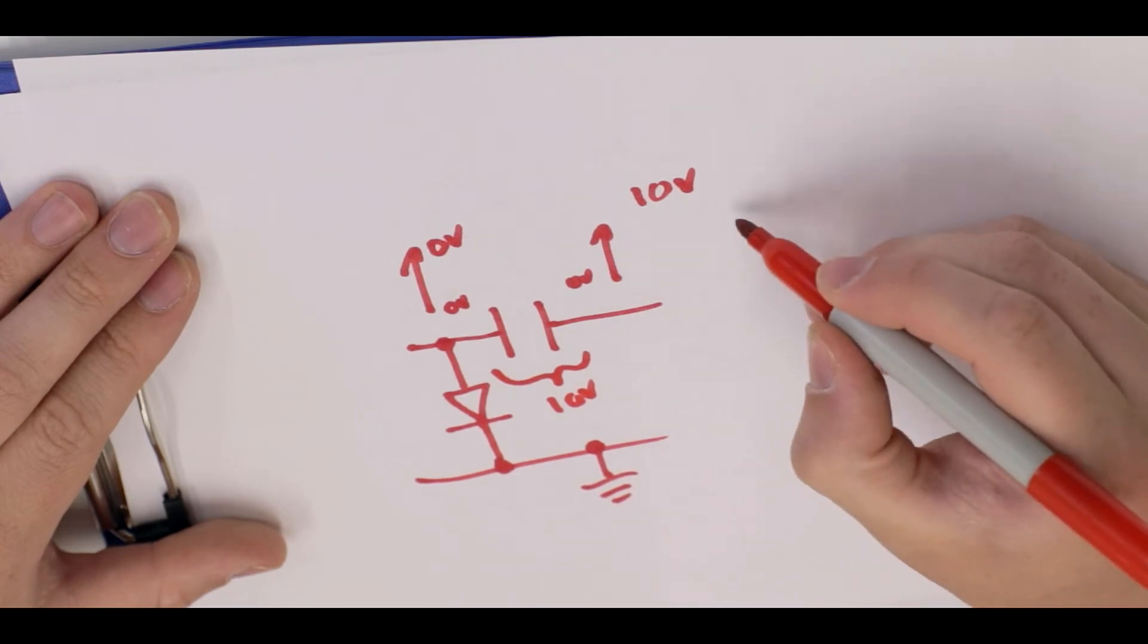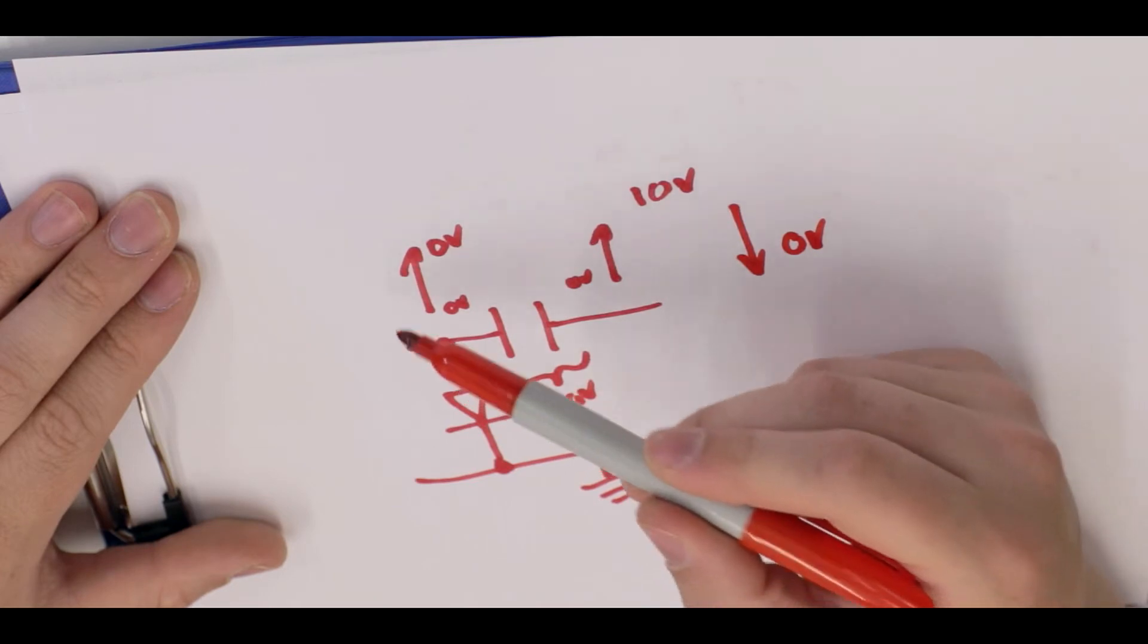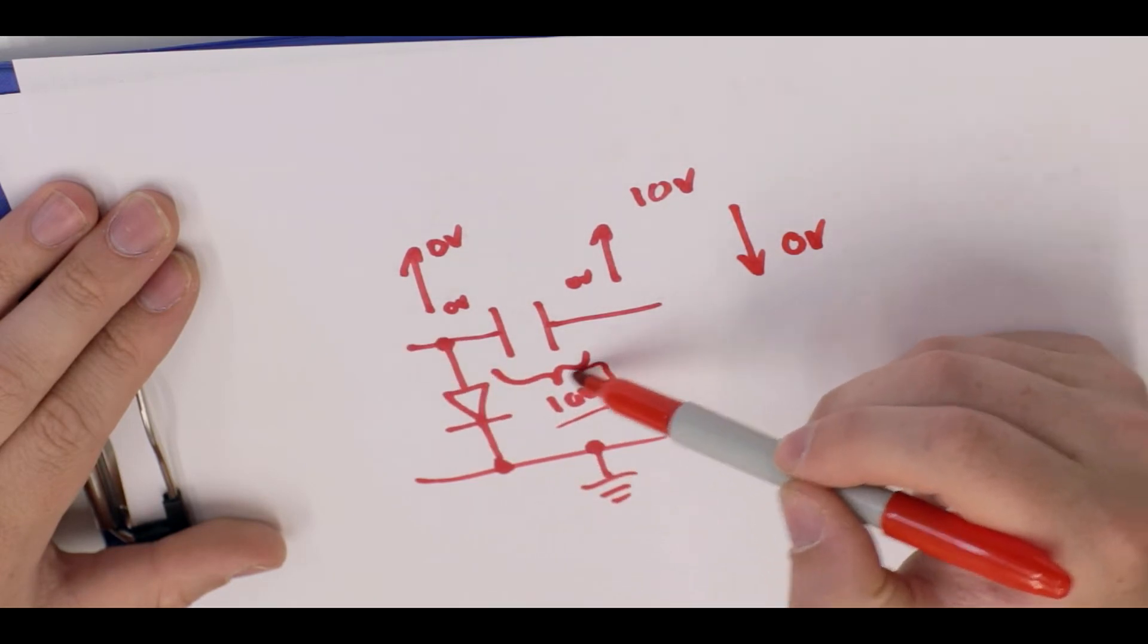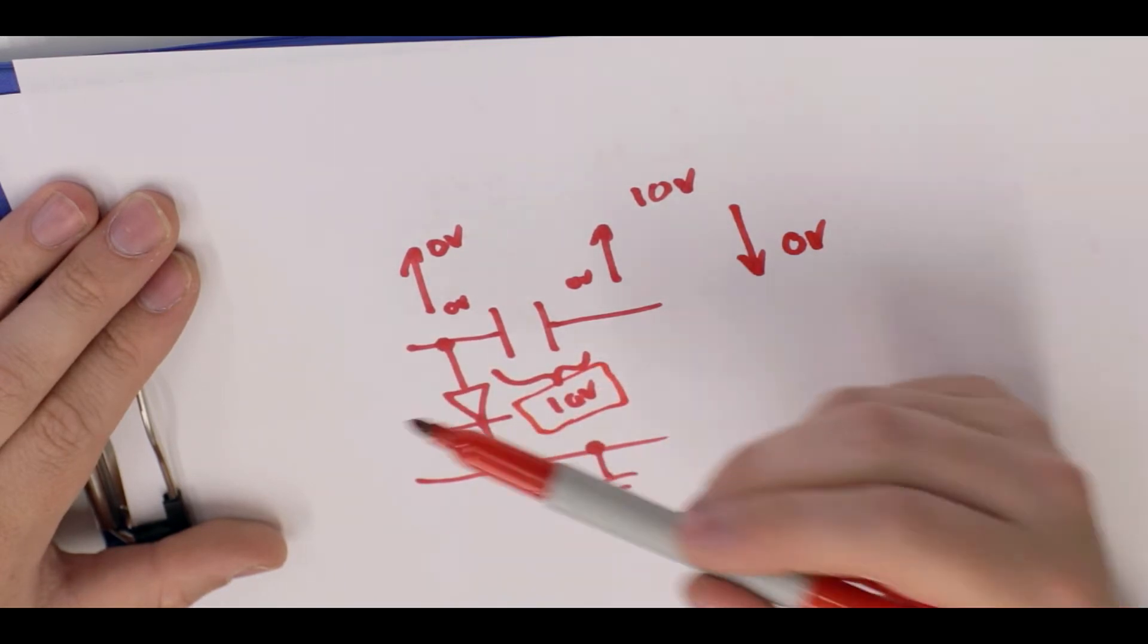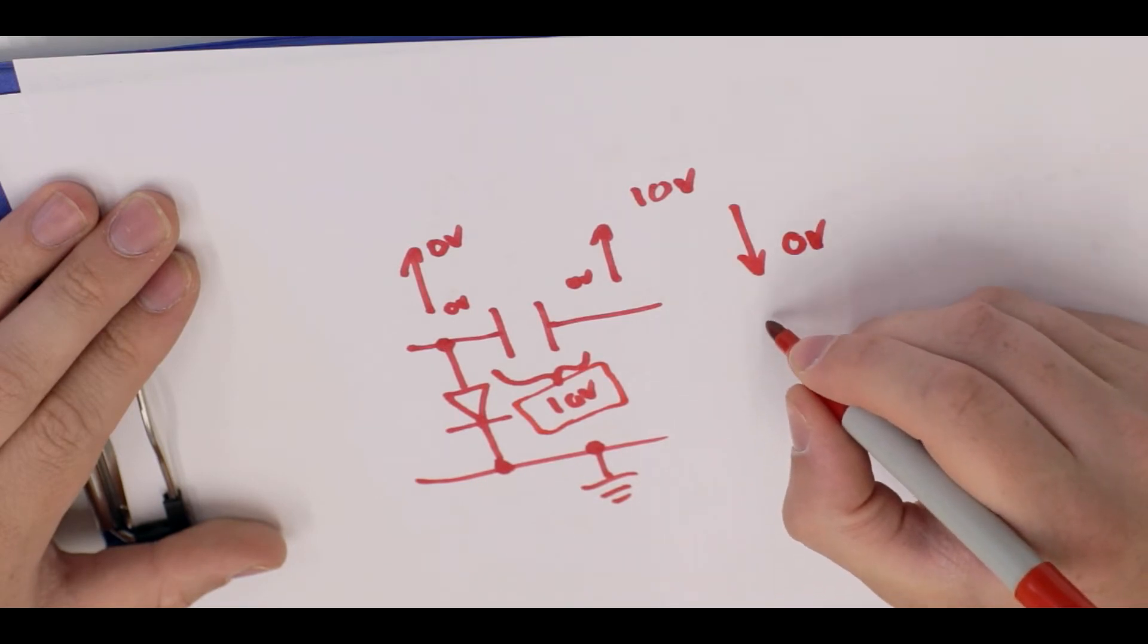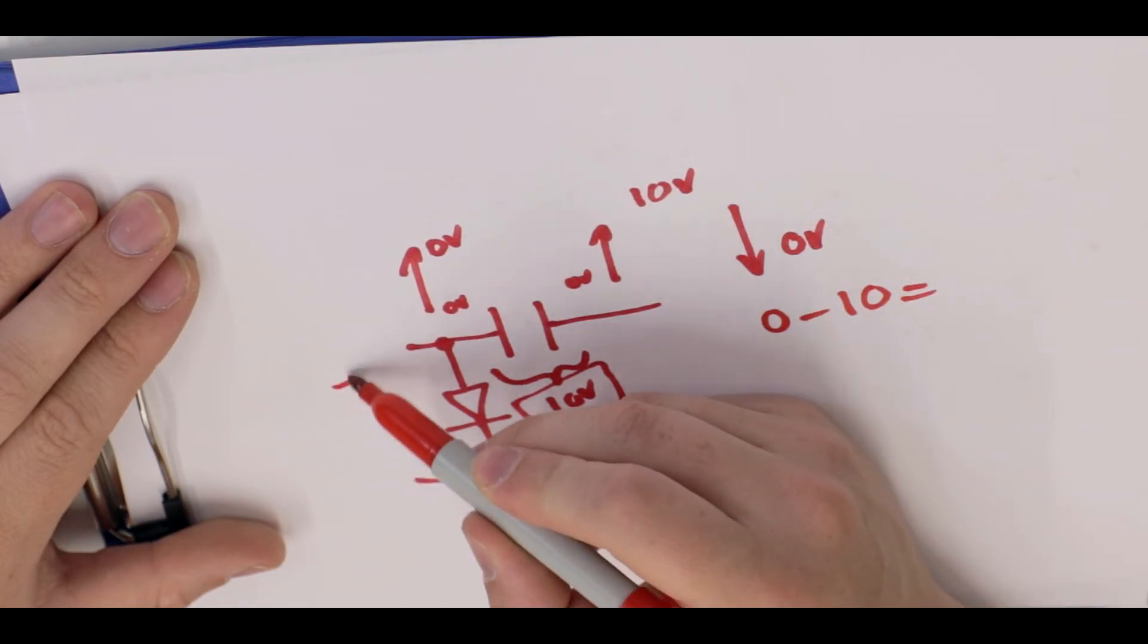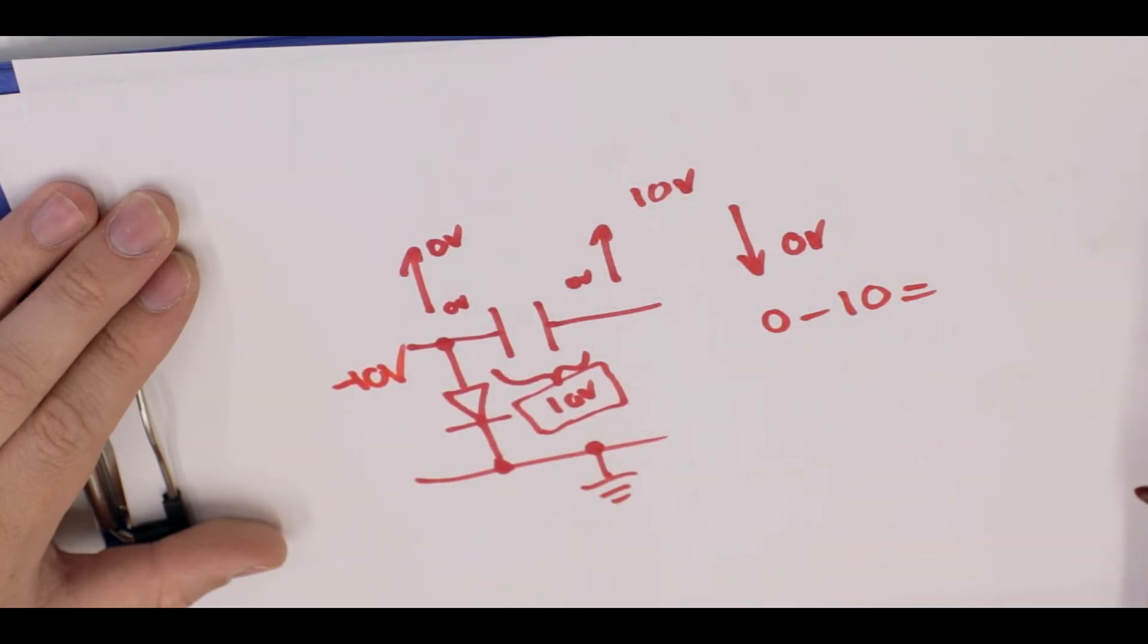Now, if we suddenly now bring this side all the way back down to zero volts, he wants to maintain a 10 volt difference, but he's at zero volts. So it becomes zero minus 10. The answer you get minus 10 volts.